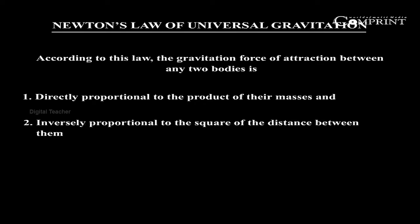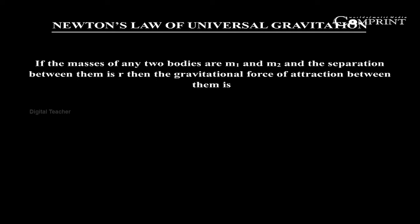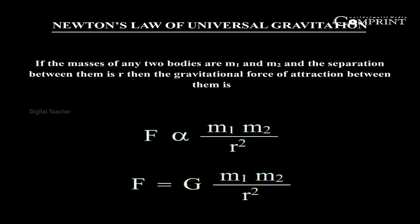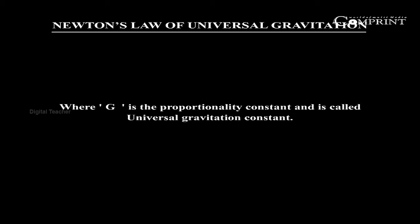According to this law, the gravitational force of attraction between any two bodies is directly proportional to the product of their masses and inversely proportional to the square of the distance between them. If the masses of any two bodies are m1 and m2 and the separation between them is r, then the gravitational force of attraction between them is F proportional to m1·m2 / r². F = G·m1·m2 / r², where G is the proportionality constant and is called the universal gravitation constant.